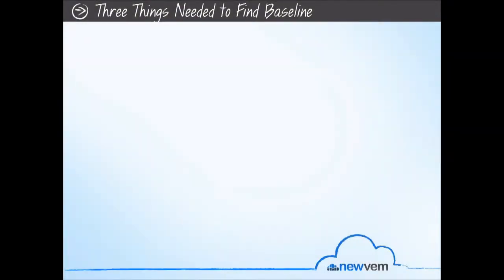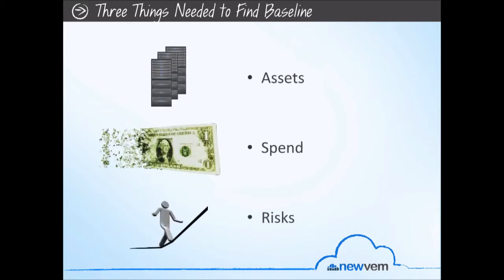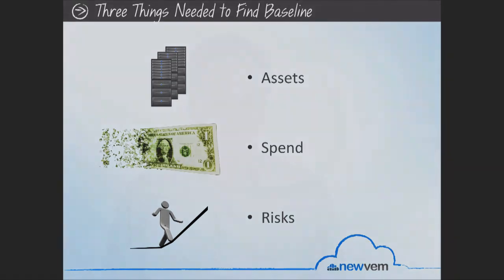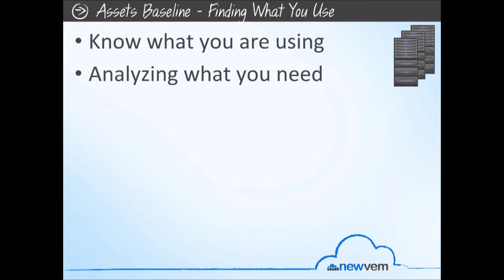At a high level, we are looking for three things: we're looking for assets, your spend, and any risks that may get in the way of operating properly. Your assets are the starting point for us to know what you are using, what you have, and then we go into the most important thing — analyzing what you need.